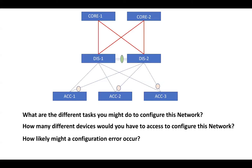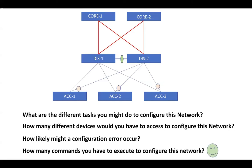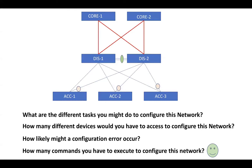Let me ask one more question: how many commands do you think we have to execute to configure this network? It's hard to give a particular number, but there will be a lot — access port configuration, trunk port configuration, VLAN configuration, SVI configuration, HSRP configuration, layer 3 interface configuration, routing protocol configuration. By asking these questions, we understood the challenges in terms of configuration in a traditional network.